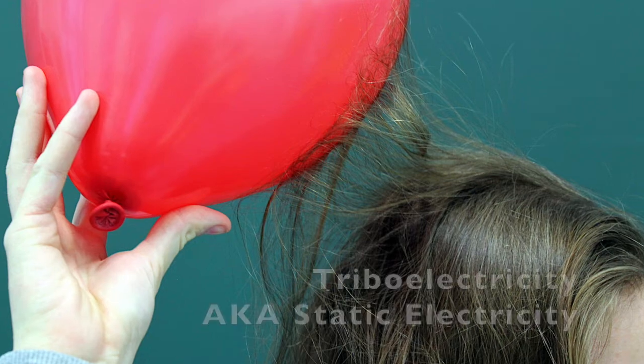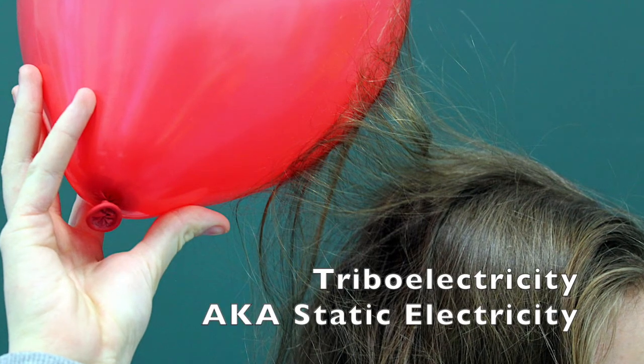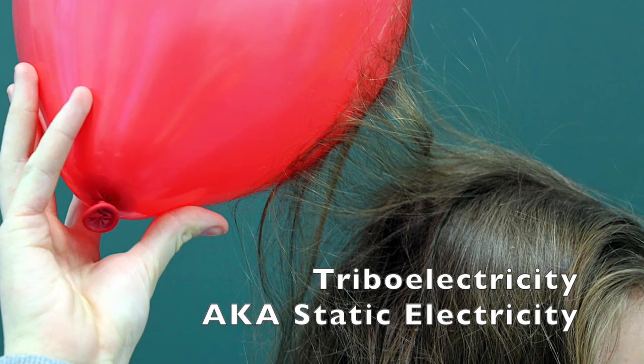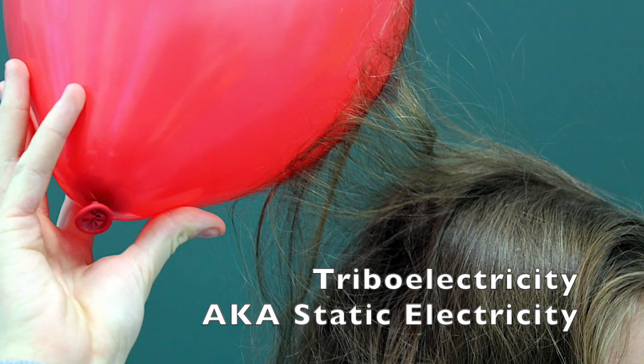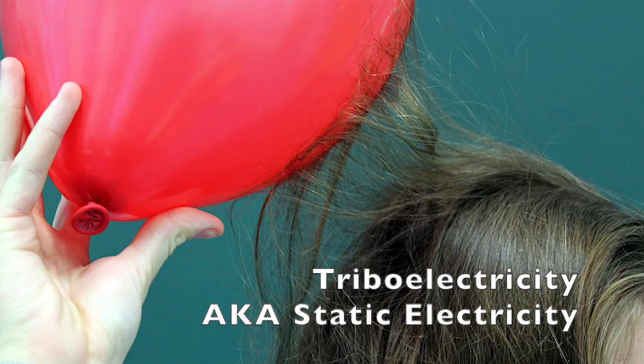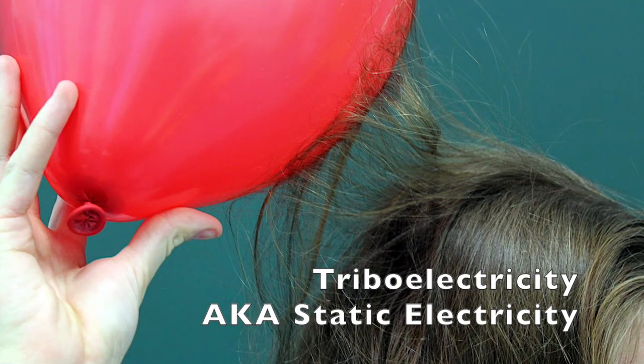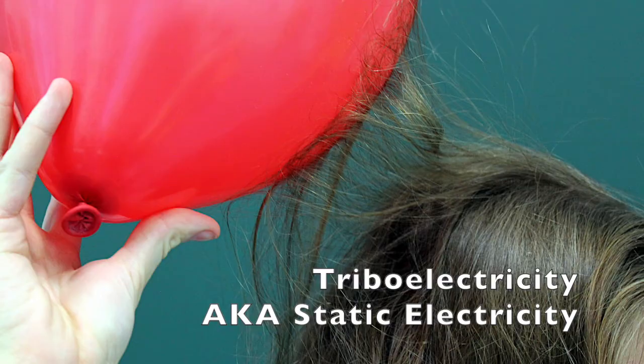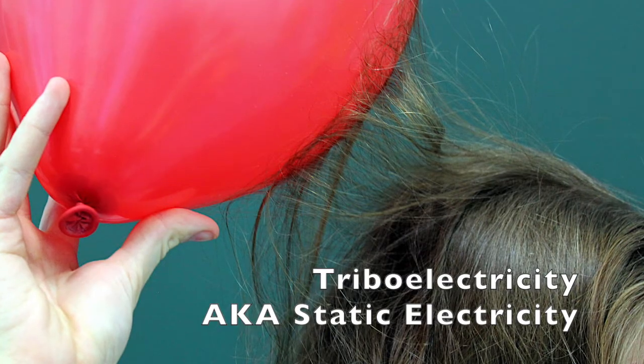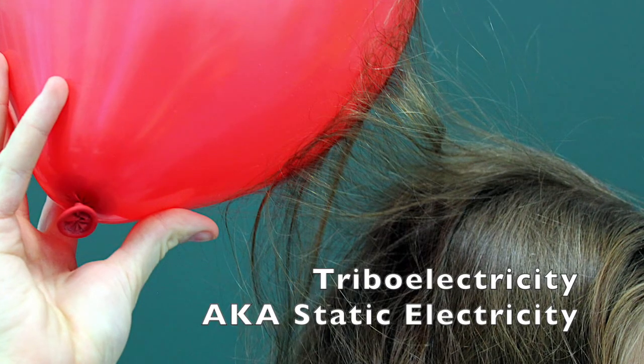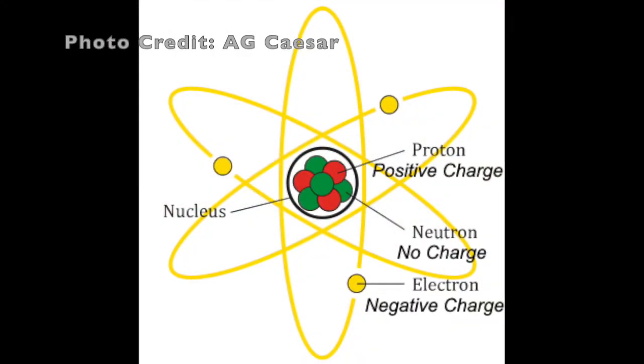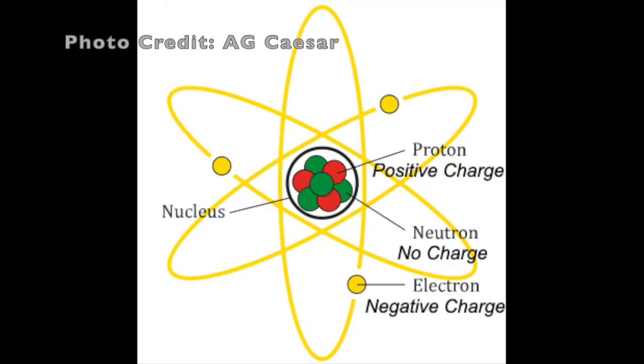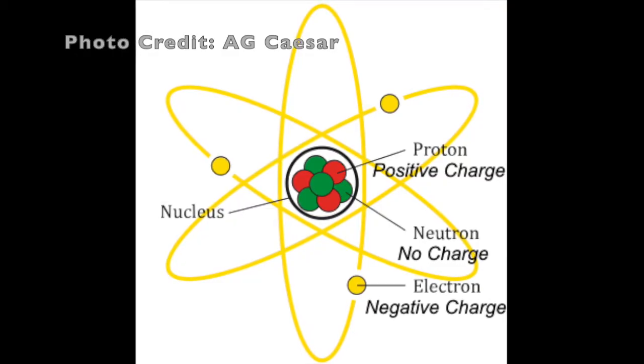Triboelectricity is a form of static electricity that occurs when two dissimilar materials come into contact, like a balloon and your hair, and has to do with the atoms in the materials. Atoms are the building blocks of all materials and are made up of three particles: protons, neutrons, and electrons.